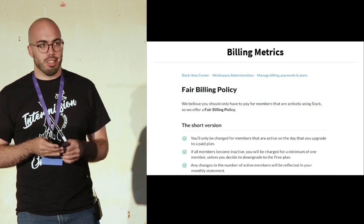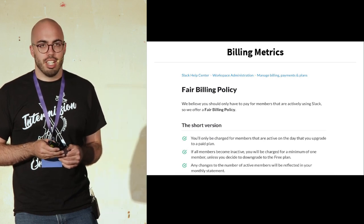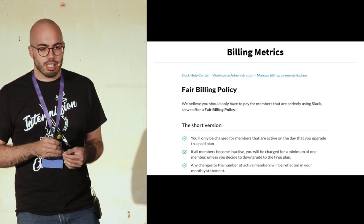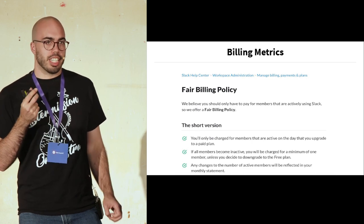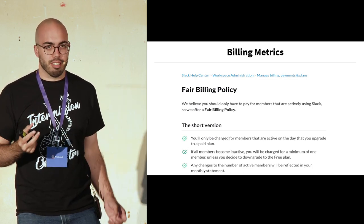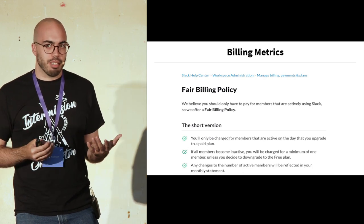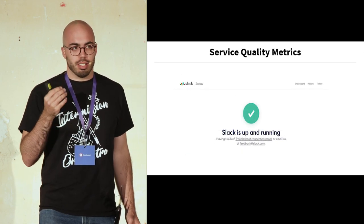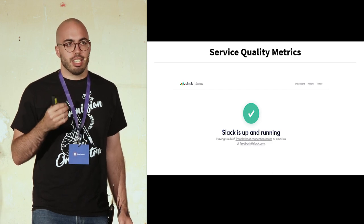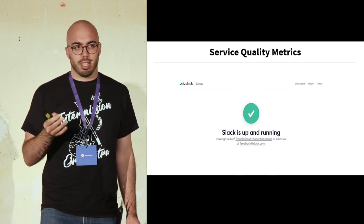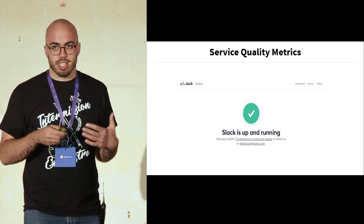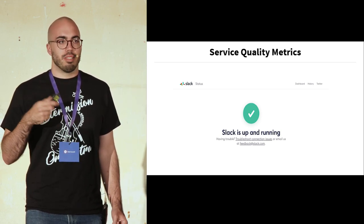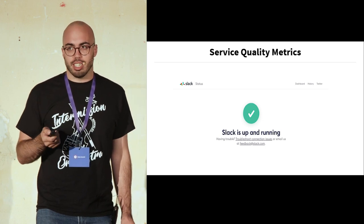We do a fair billing policy, which means we only bill users when they come online. So it's very important for us to capture when a user becomes active in a Slack team — if we can't do that, we can't accurately bill. We also use our logs to measure service quality. Slack's mission is to make work life productive and pleasant, so we need Slack to be a reliable service, available whenever and wherever our users need it. We use logs and metrics to measure the availability and status of our service.